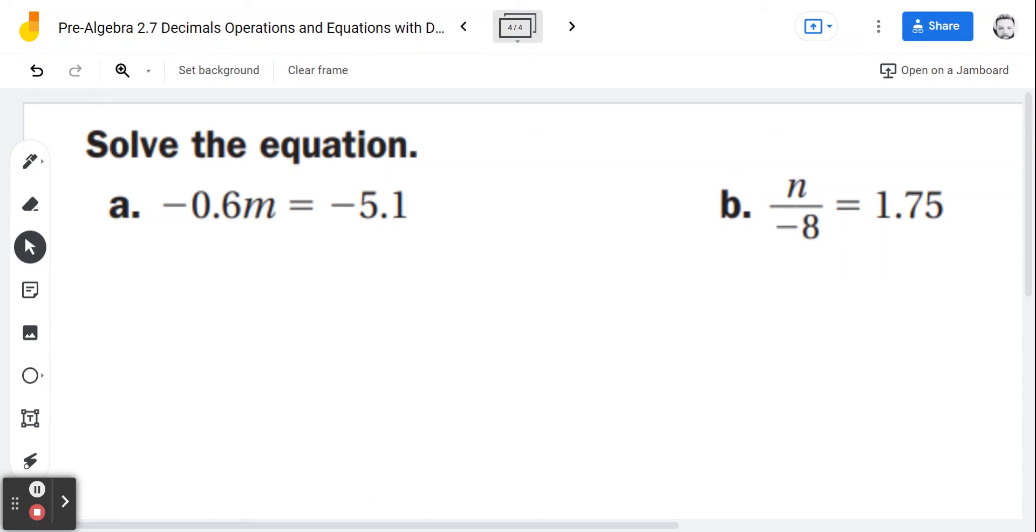All right, so these are two more examples, but what are we going to do here? We're still going to do m or n equals some stuff. We've got to do the opposite. Notice on the last two problems we added and subtracted. What math things are we going to do here? Multiply or divide.